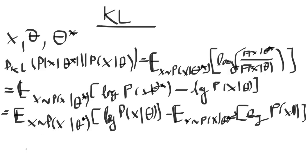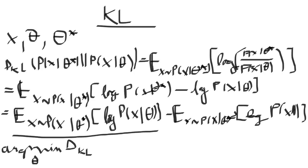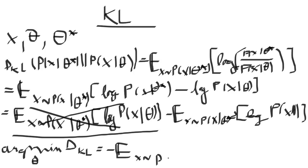The final step of our derivation is to take the argmin over theta of this KL divergence equation. When we do that, the first term — the expected value of the logarithm of the true distribution p of x given theta star — does not depend on theta, so we can eliminate it from the minimization. We remain only with the second term: argmin over theta of the KL divergence equals minus the expected value, with samples taken from the true distribution p of x given theta star, of the logarithm of p of x given theta.